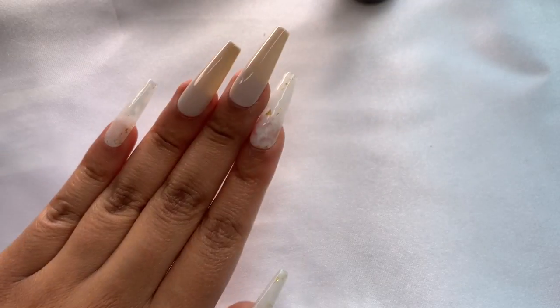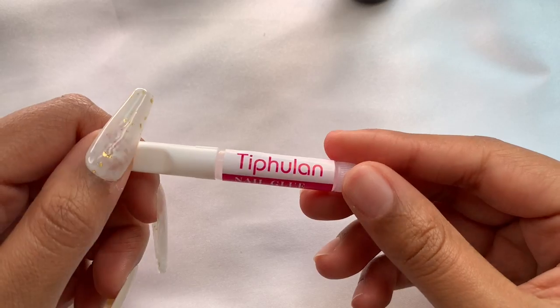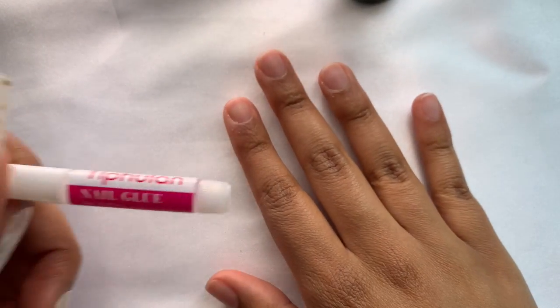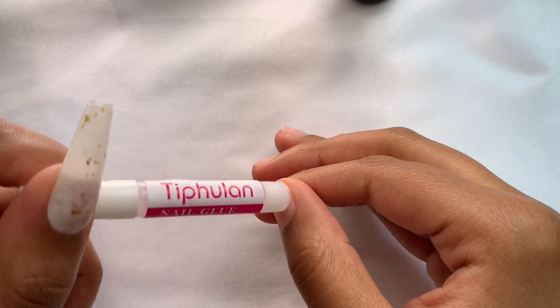So if you wear press on nails, you'll know that nail glue is one of the best ways to put them on because it's very quick and very easy.